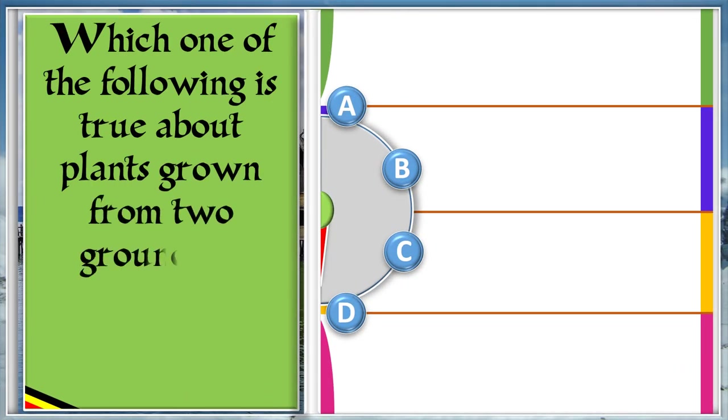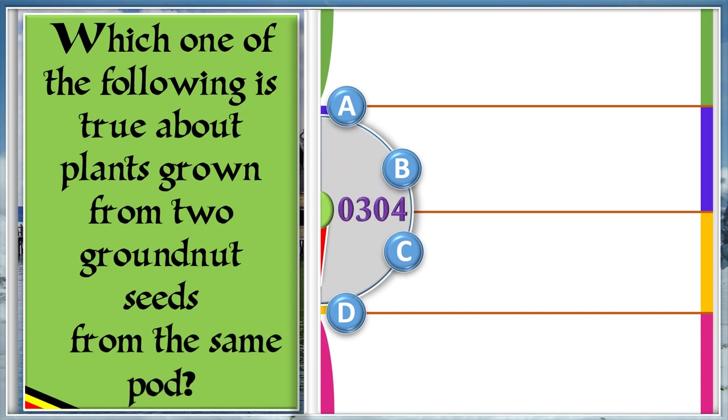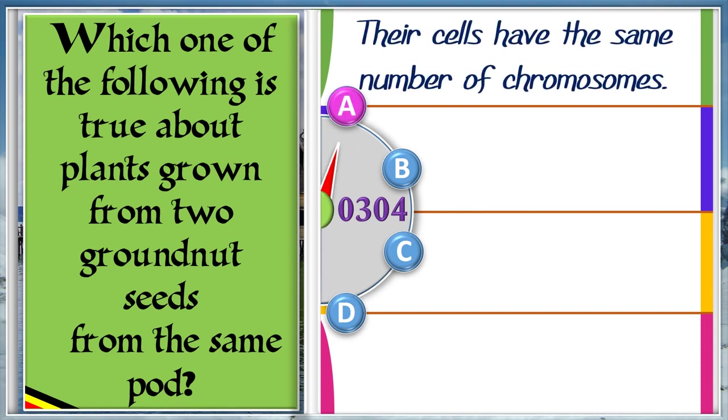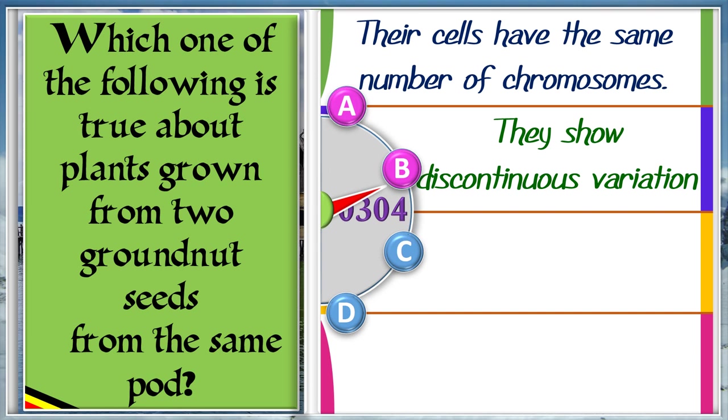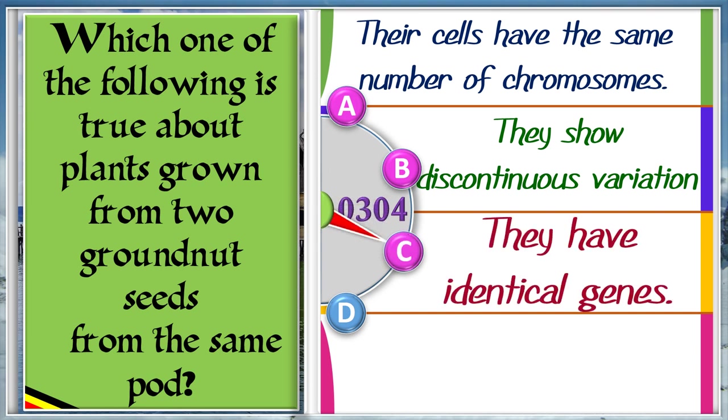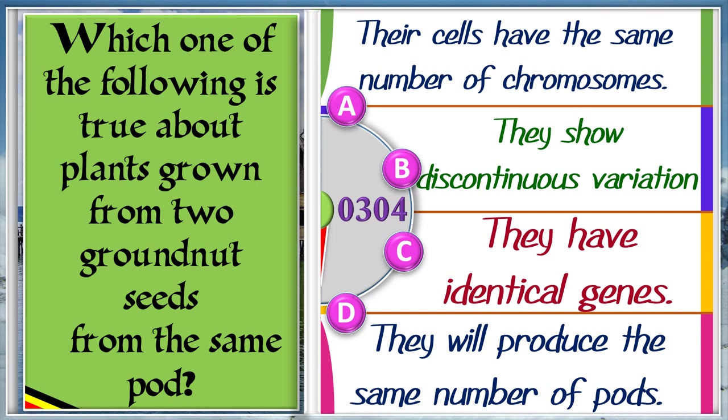Which one of the following is true about plants grown from two groundnut seeds from the same pod? A: Their cells have the same number of chromosomes. B: They show discontinuous variation. C: They have identical genes. D: They will produce the same number of pods. The answer is A, their cells have the same number of chromosomes.